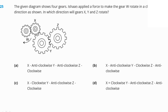The given diagram shows four gears. Ishan applies force to make gear W rotate clockwise. So X will move anti-clockwise, Y will move clockwise, and Z will move anti-clockwise. Option D — X anti-clockwise, Y clockwise, Z anti-clockwise — is our right answer.